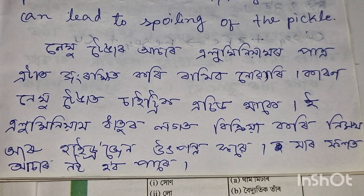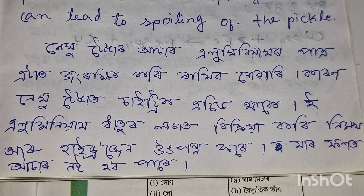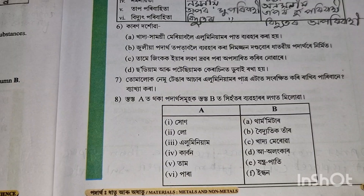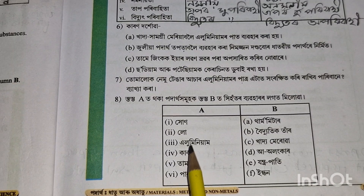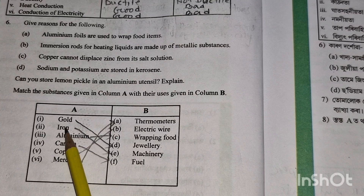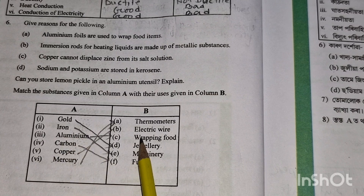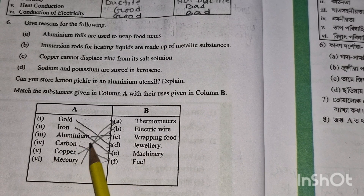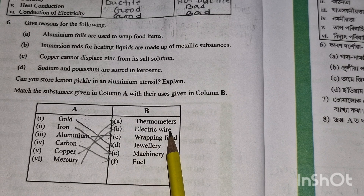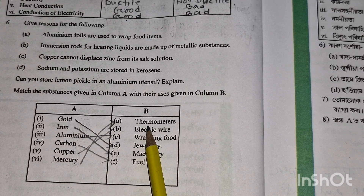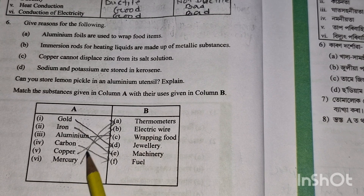Uses of materials: Gold is used for jewelry. Iron is used in machinery. Aluminum is used for wrapping food. Carbon is used in various forms. Copper is used for electric wires and electrical purposes. Mercury is used in thermometers.